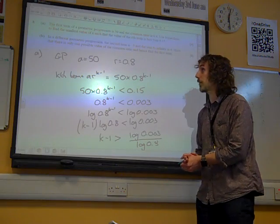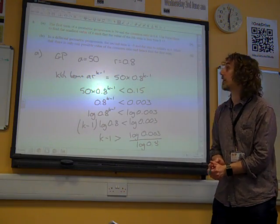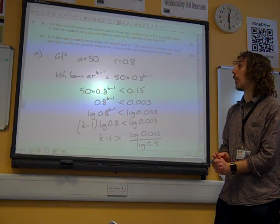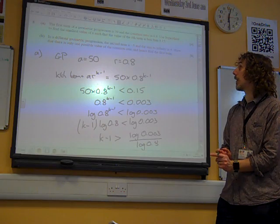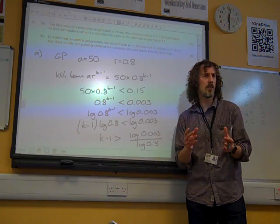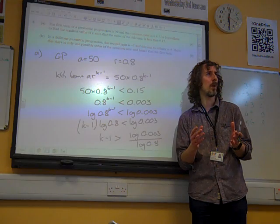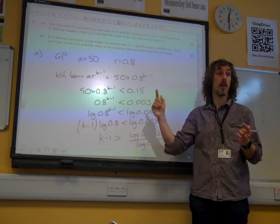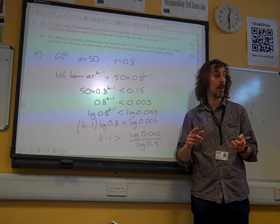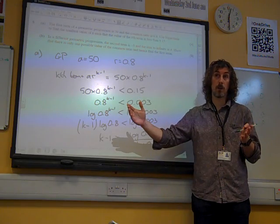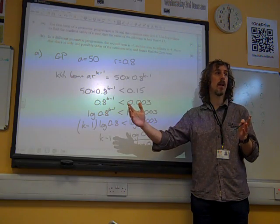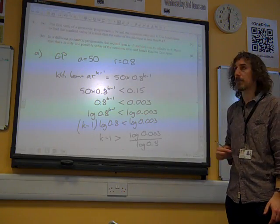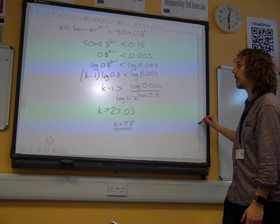In a different geometric progression. So we're starting again now. The second term is minus 3 and the sum to infinity is 4. Show that there is only one possible value of the common ratio and hence find the first term. We read that and we should think, hang on, why are they saying there's only one possible value? And then you think, ah, but wait, it said the sum to infinity. And the sum to infinity is only valid if R is between minus 1 and plus 1. So you're already starting to think where we're heading to with this.